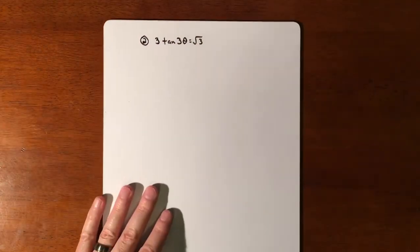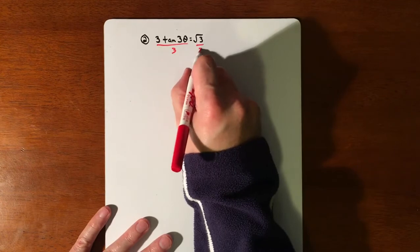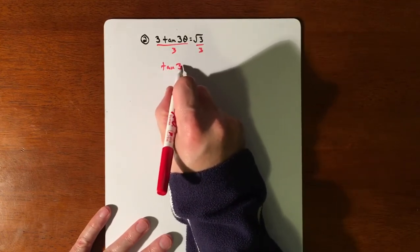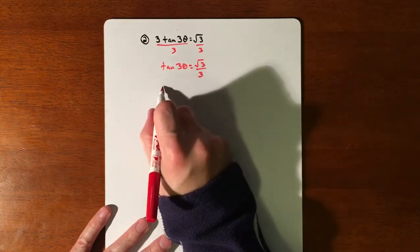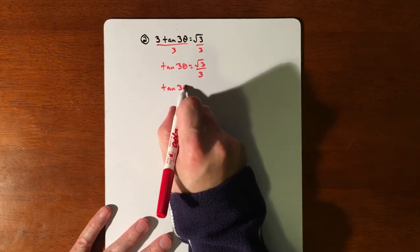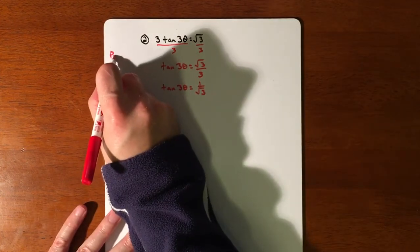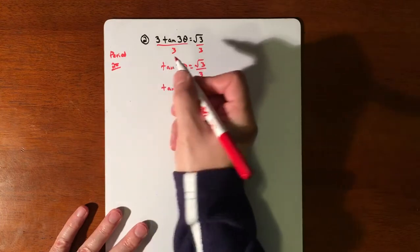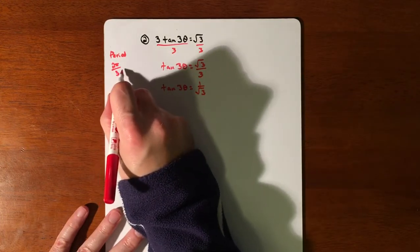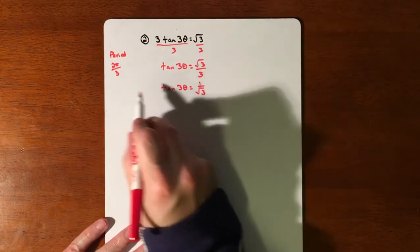Alright. So we'll do one more. And so on this one, we need to get the tangent 3θ by itself. So we divide the 3 over. Tangent of 3θ is going to be √3/3. And that actually would have came from, if we unrationalized it, it's 1/√3. And we'll come back to that in just a second. Our period's going to get messed with again. So normally it's 2π, but now we're dividing it by 3. And it's tripling the amount of solutions that we've got going on here. So that is our period.